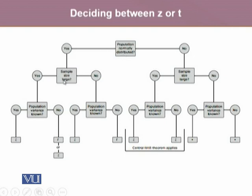But if, for a normally distributed population, the sample size is not too large, then we ask whether the population variance is known. If the population variance is known, we use Z distribution, and if the population variance is unknown, we use T distribution.